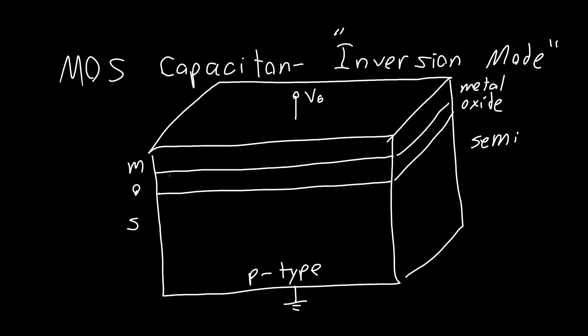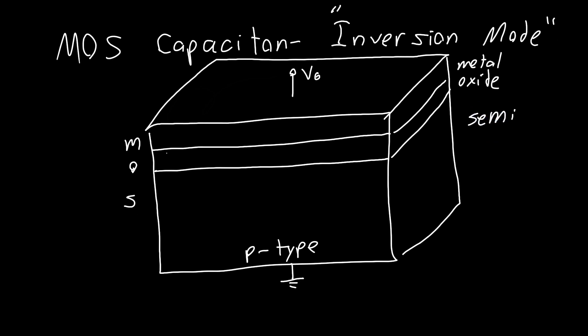So what is inversion mode? Well we know if this is a p-type semiconductor we've got a bunch of holes floating around, we've also got a bunch of negatively charged ions, probably some boron atoms that just donated one of their holes or gained an electron and now they're ions.